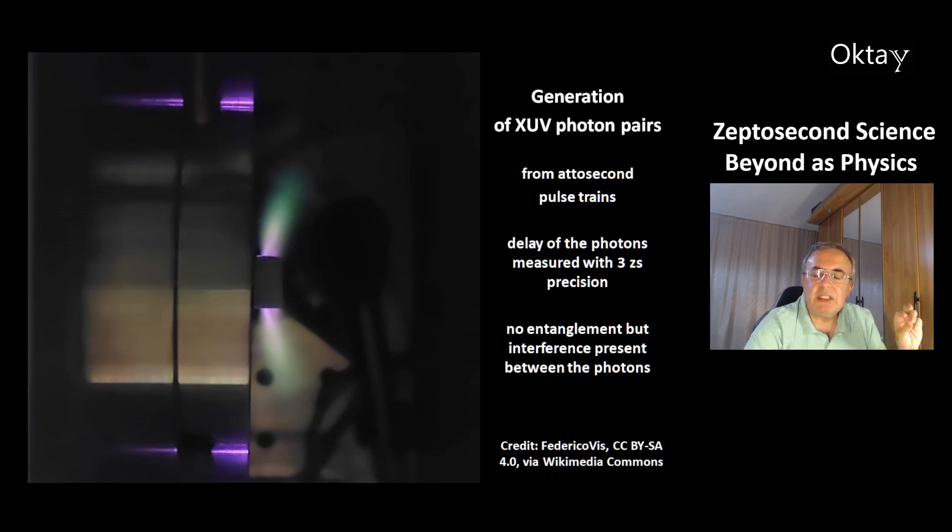This is how the generation works, the generation of extreme UV photon pairs from attosecond pulse trains, and the delay of the photons was measured with a precision of 3 zeptoseconds. In this measurement, the result was that there is no entanglement between the photons but interference.